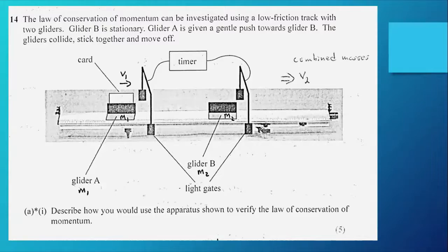It says describe how you would use the apparatus to verify the law of conservation of momentum. The first thing I did before I even looked at the question was to annotate the diagram. I've got glider A, I've called that m1 with a velocity v1. When they come together, glider m2 has a mass m2. They will join together and their combined mass will of course be m1 plus m2 moving at a velocity v2.